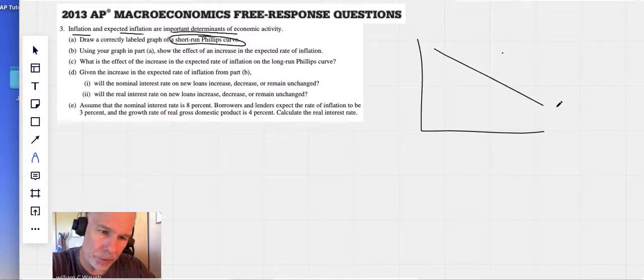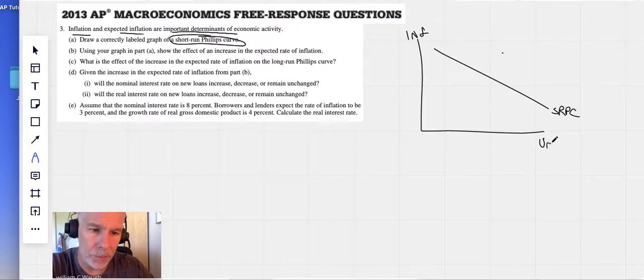We're going to draw a downward sloping short run Phillips curve and label it SRPC for short run Phillips curve. Inflation on the vertical, unemployment on the horizontal. All right, easy, done.